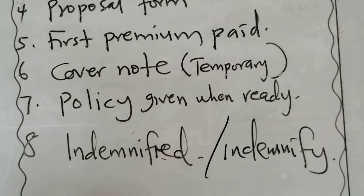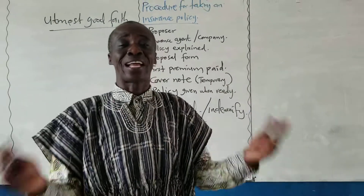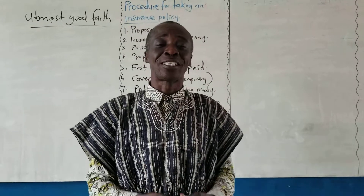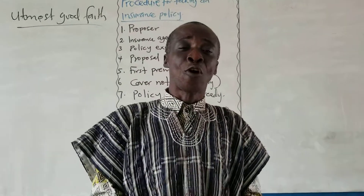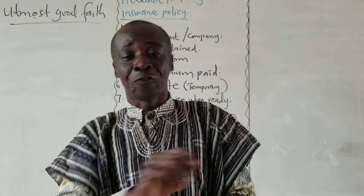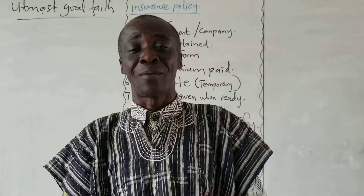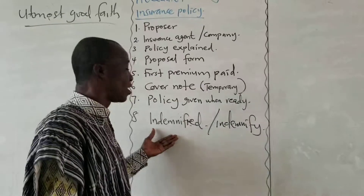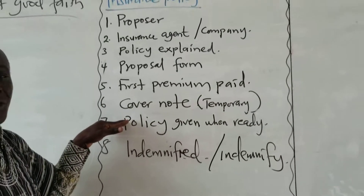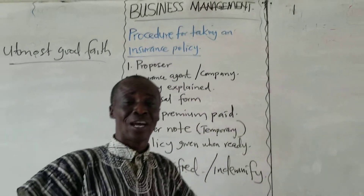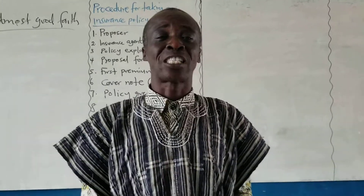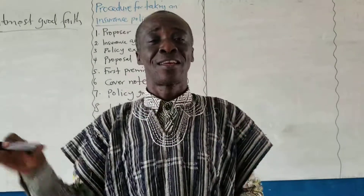Now the policy has started and you have your policy document. The next thing is that if the unfortunate event happens, you will obtain a claim form, fill it in, the extent of damage will be determined, and then you will be indemnified. That is the procedure you go through when you want to insure your property or take any insurance policy.